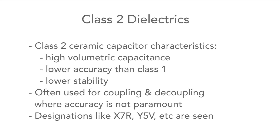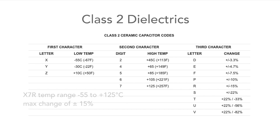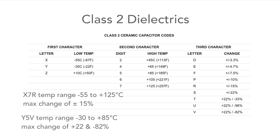Designations such as X7R, Y5V and the like are often seen, and these characters define the type of performance they offer. The first character is a letter giving the low end operating temperature, the second is numeric indicating the high end operating temperature, and the third character is a letter indicating the capacitance change over the temperature range. For example, an X7R capacitor has a temperature range of minus 55 to plus 125 degrees with a change of up to plus and minus 15 percent. Another example is Y5V, which has a temperature range of minus 30 to plus 85 degrees with a change of between plus 22 and minus 82 percent.